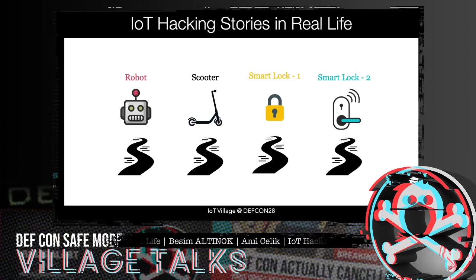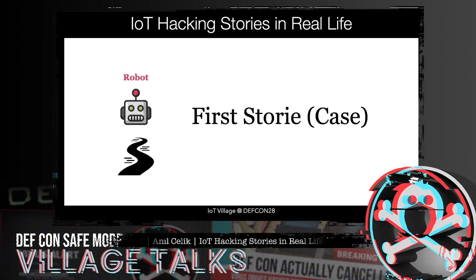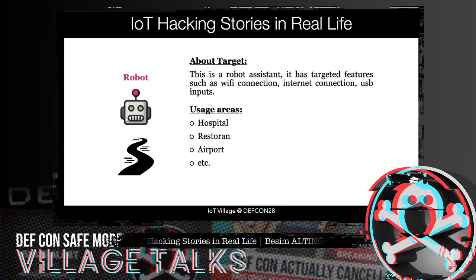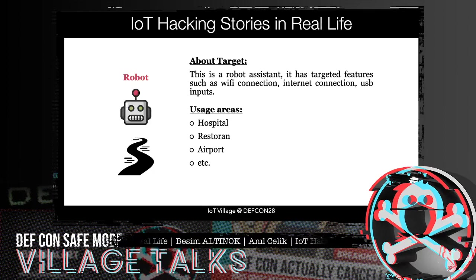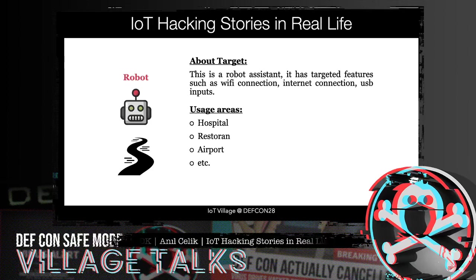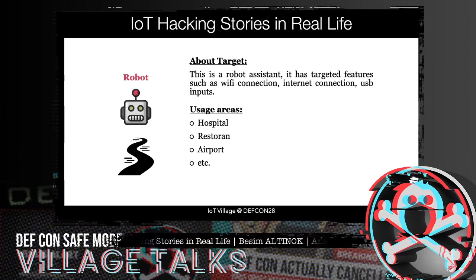In this presentation I would like to share the details of three types across four products. The first is a robotic assistant. This robot system has target features such as Wi-Fi connection, internet connection, USB inputs, and others. This product is used in hospitals, restaurants, airports, and other possible areas.